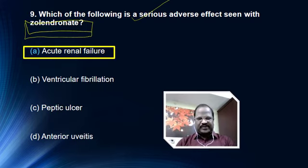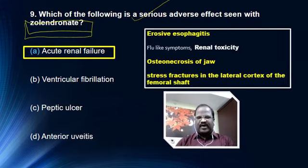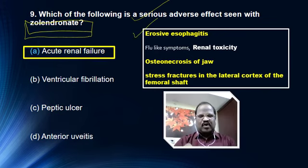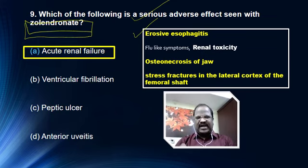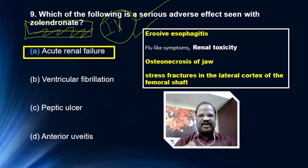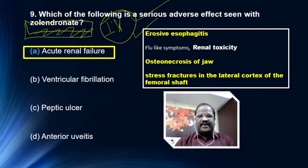For extra information: generally, orally given bisphosphonates cause erosive esophagitis. To avoid this, advise the patient to take the drug on empty stomach with full glass of water in erect posture. Zoledronic acid is the intravenously given bisphosphonate. Since it is given intravenously, it may cause thrombophlebitis. During infusion, risk of fever, chills, and rigor — that is called flu-like symptoms. But the serious adverse effect is acute renal failure.